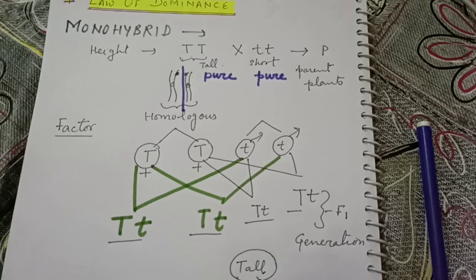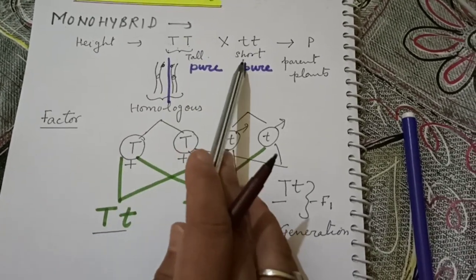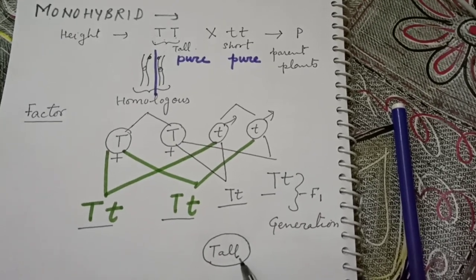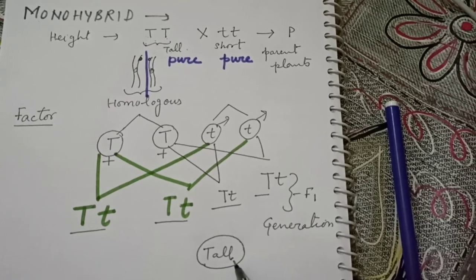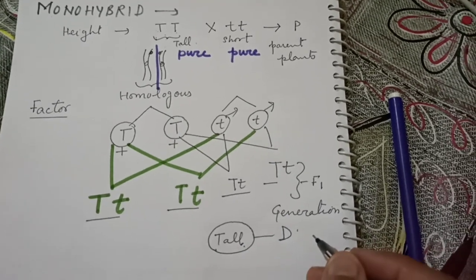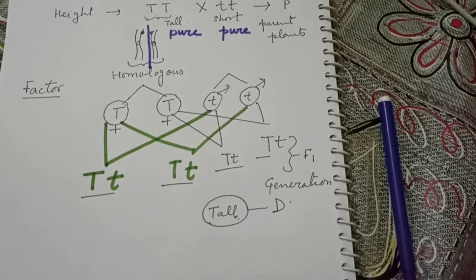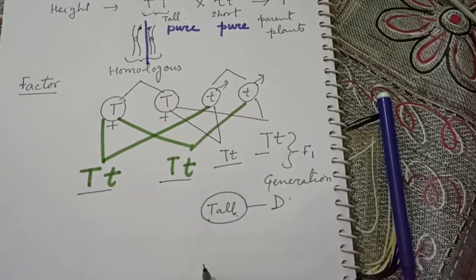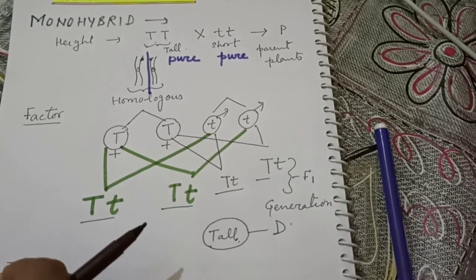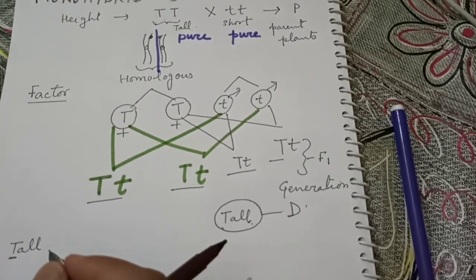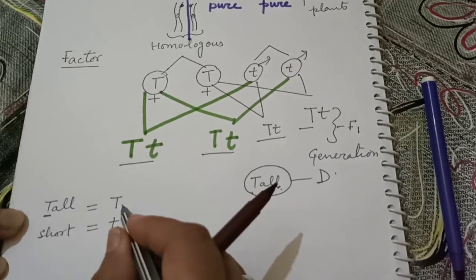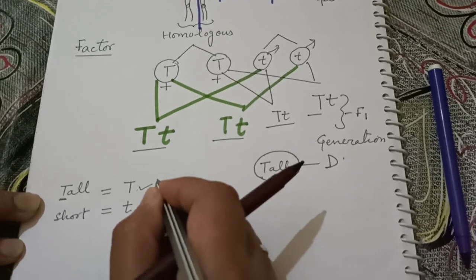This is the law of dominance: when a cross is made between one pair of contrasting characters, in the F1 generation only one trait of that particular character is visible. That visible trait is termed dominant — here, tall — and the hidden trait is recessive, which is short. For notation, the dominant trait uses a capital letter (e.g., T for tall) and the recessive trait uses a small letter (e.g., t for short) to distinguish dominant from recessive.